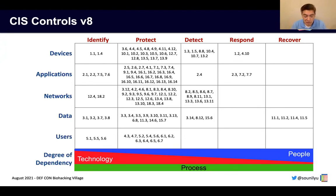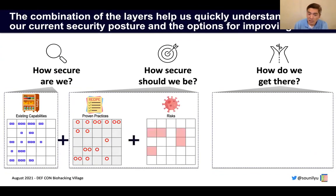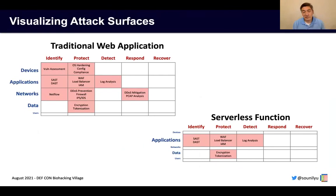This gives you a sense of the controls you would need to implement for each of these boxes, as well as the priority order that you would follow. So we've captured existing capabilities and proven practices, and to be able to answer the rest of the question on how secure we should be, let's also look at risks. The Cyber Defense Matrix provides a way that we can actually visualize our risk and attack surfaces and vulnerabilities.